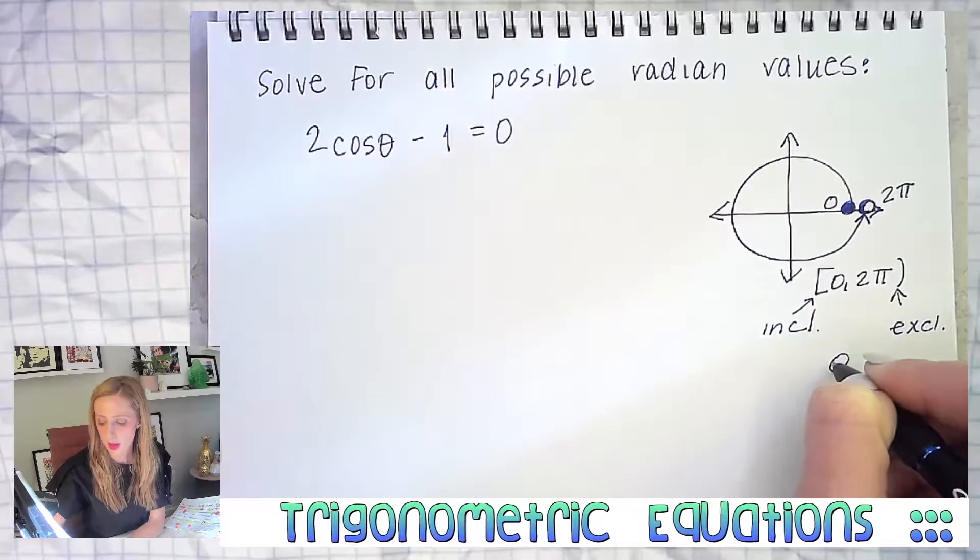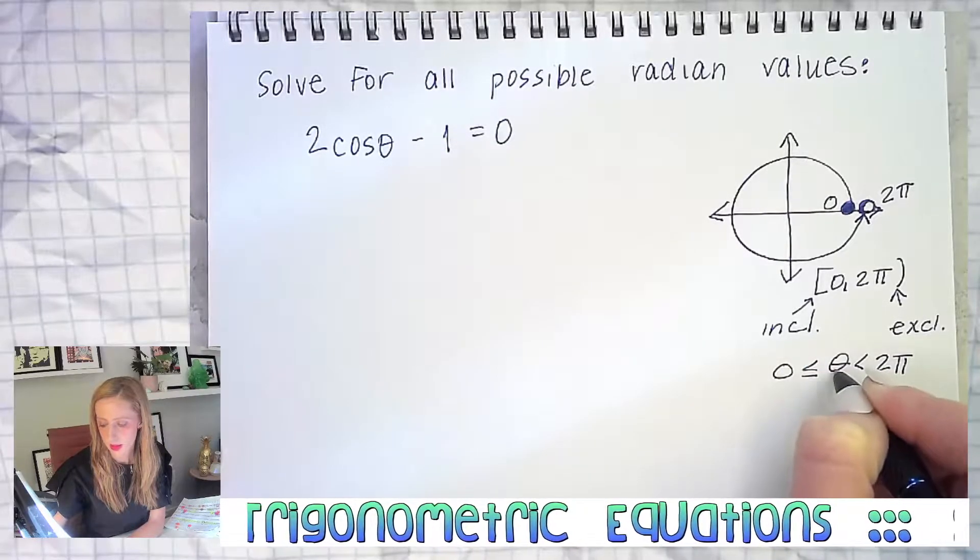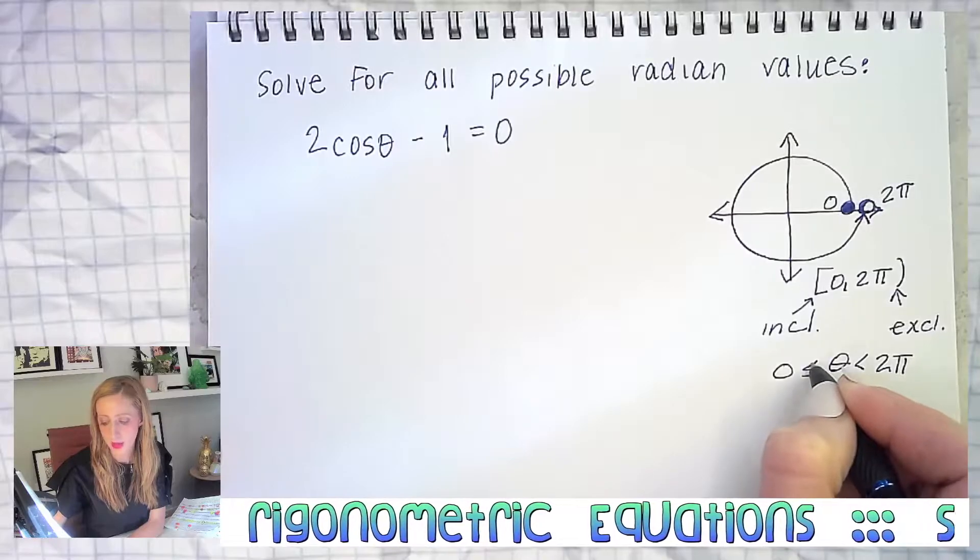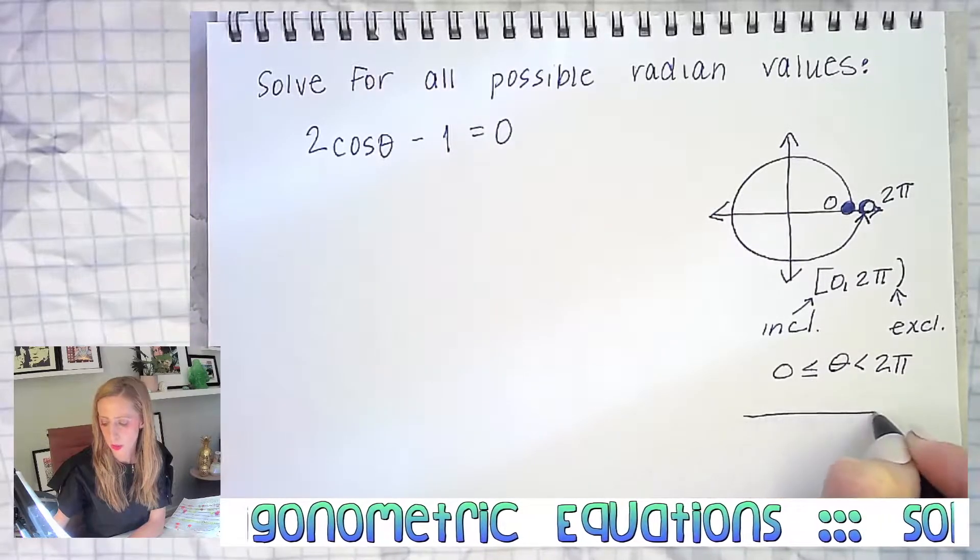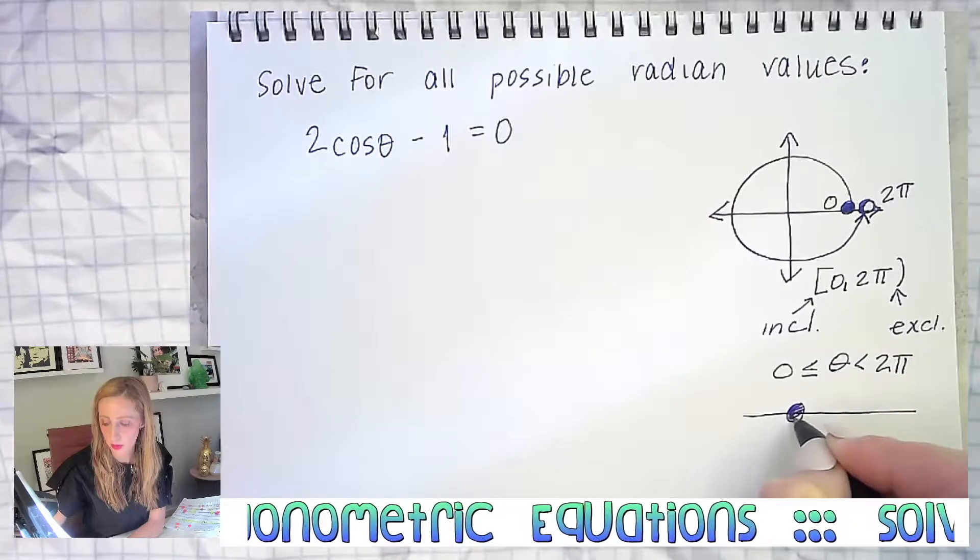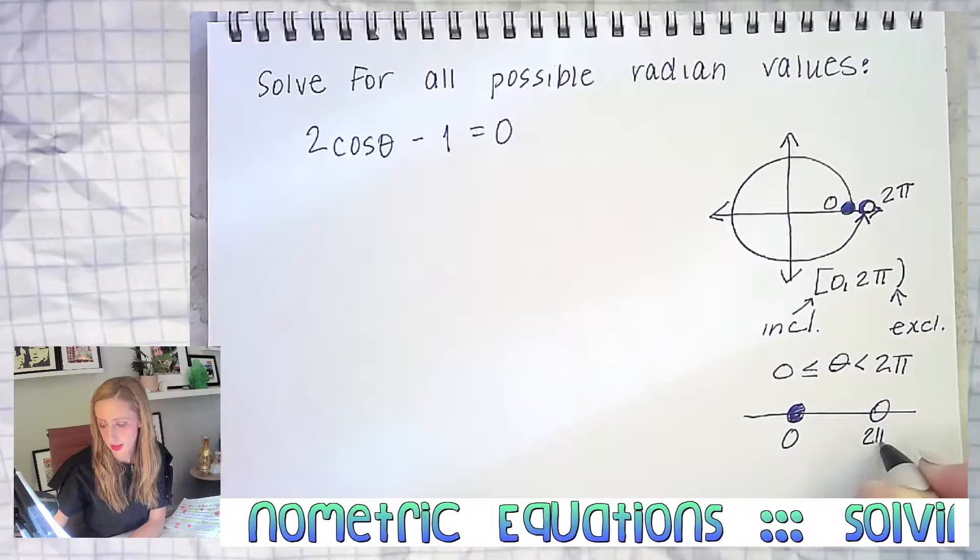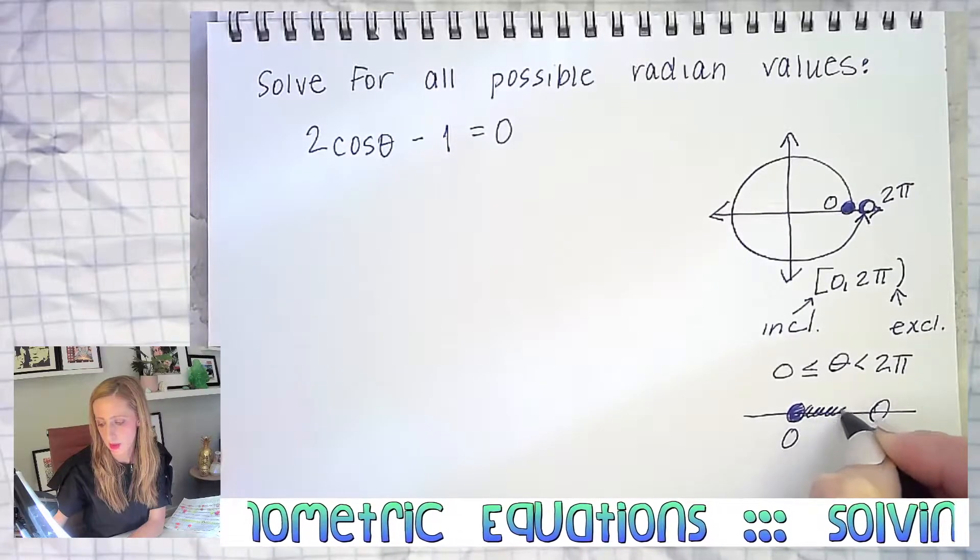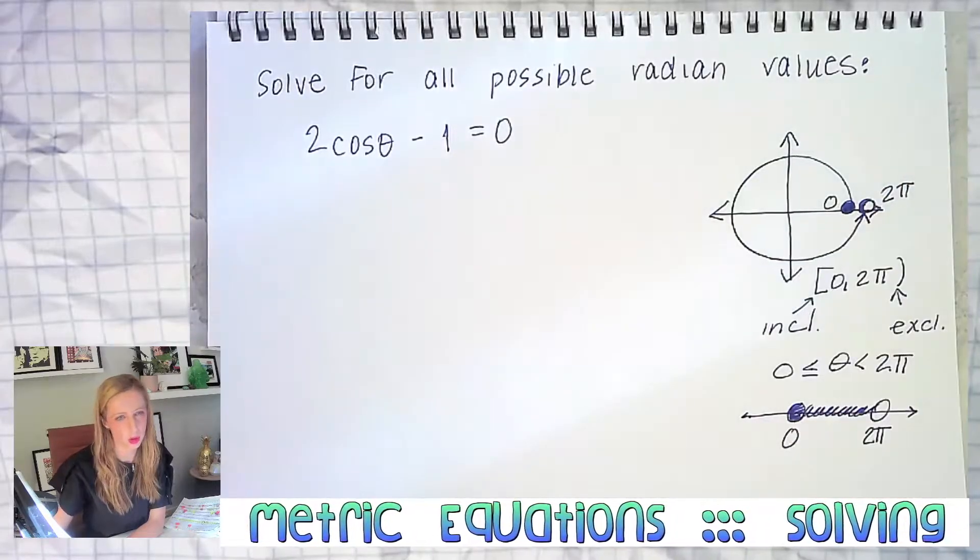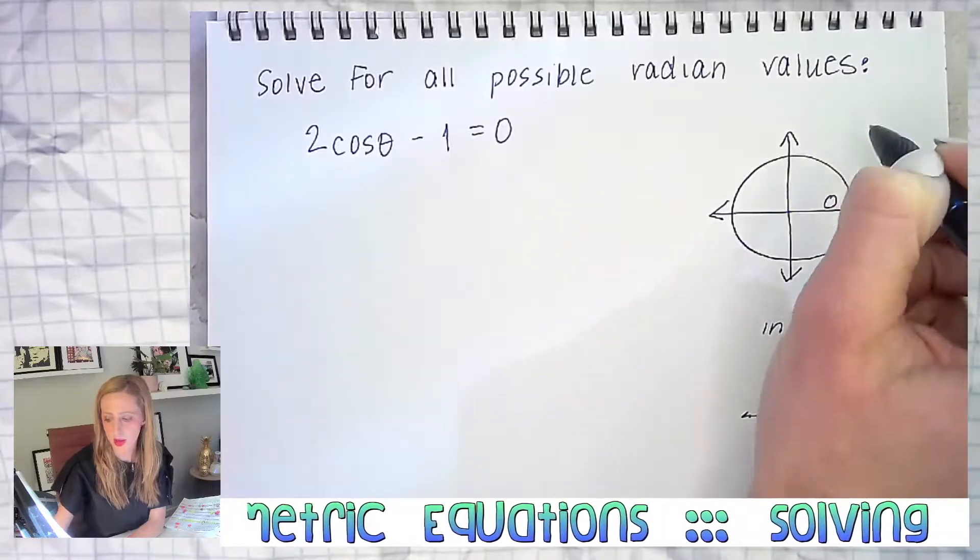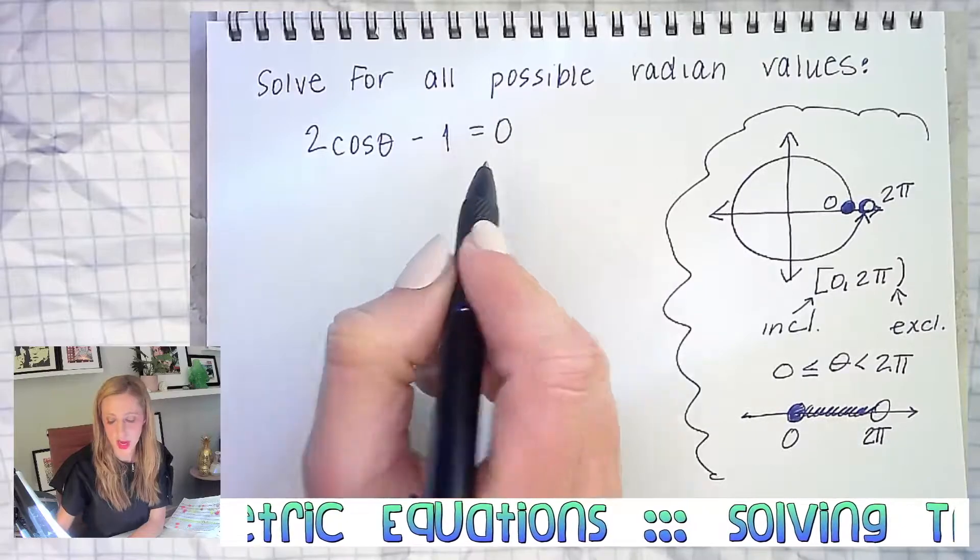The other way we wrote it looked like this: zero is less than or equal to theta, theta is less than two pi. If you remember, if you had a number line it might have looked like this and then you shaded in between. It's like I took this number line and wrapped it around the circle.